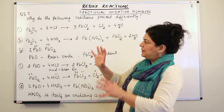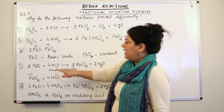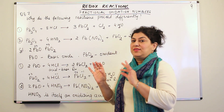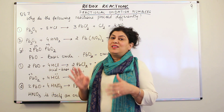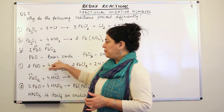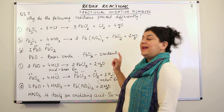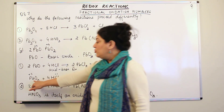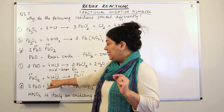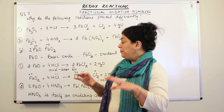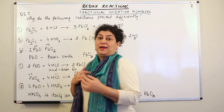Pb3O4 reacts with HCl to give PbCl2, Cl2, and 4H2O. Let us split this reaction. Pb3O4 is made up of PbO and PbO2. The PbO part: 2PbO reacts with 4HCl to form PbCl2 and H2O. When an acid reacts with a base it results in the formation of a salt and water — a neutralisation reaction. So since PbO is a basic oxide, it reacts with HCl in an acid-base neutralisation reaction, giving the salt PbCl2 and water. On the other hand, PbO2 is oxidising in nature, so when it reacts with HCl it undergoes a redox reaction, not an acid-base neutralisation reaction.